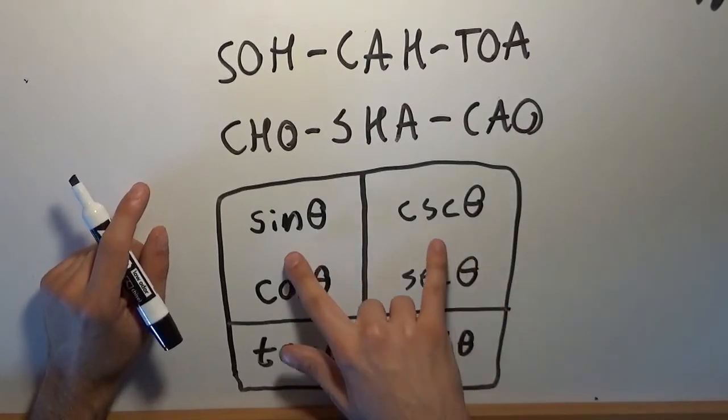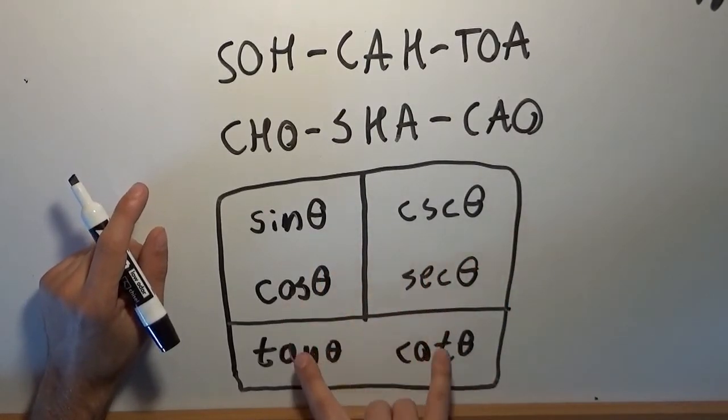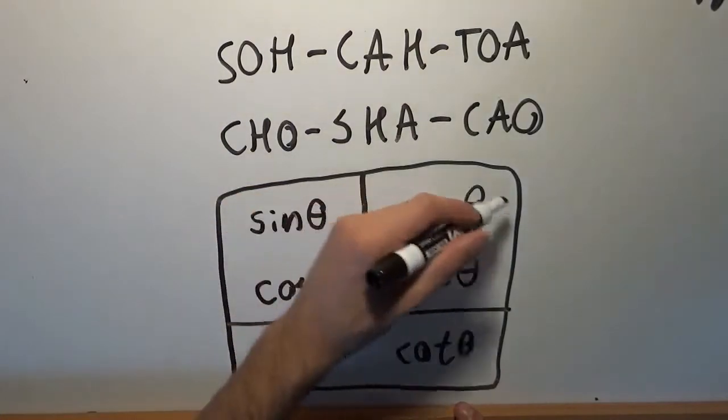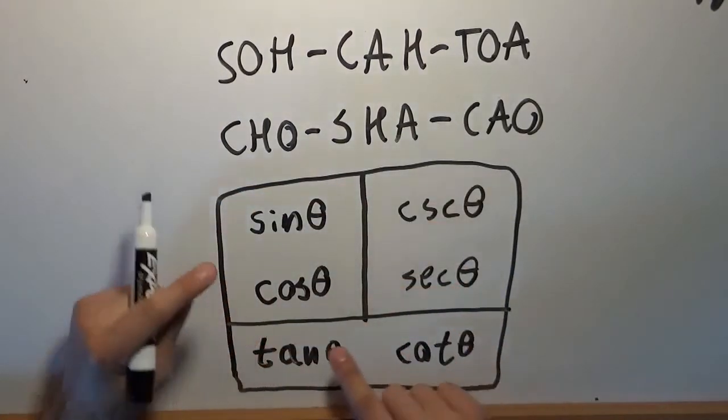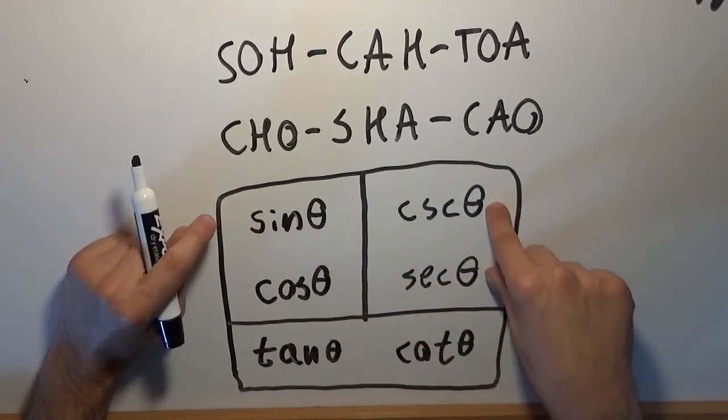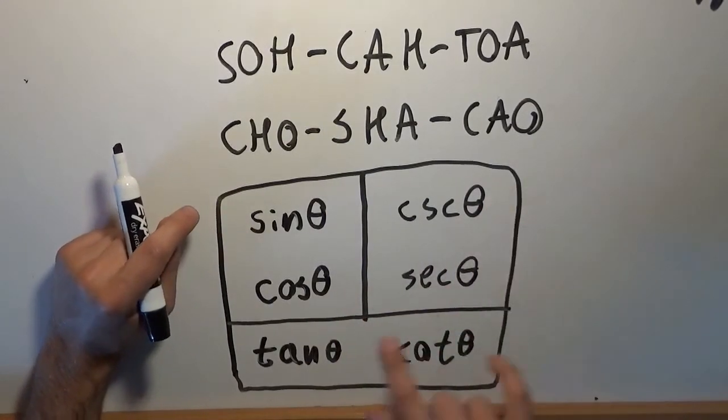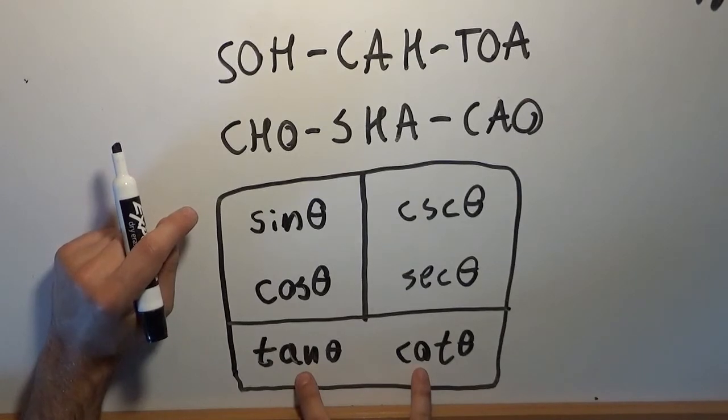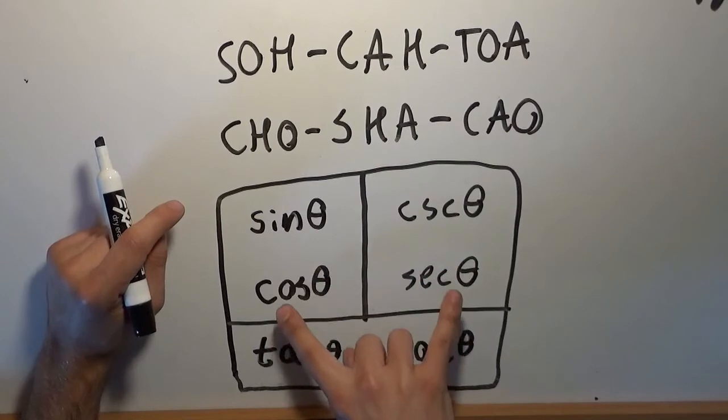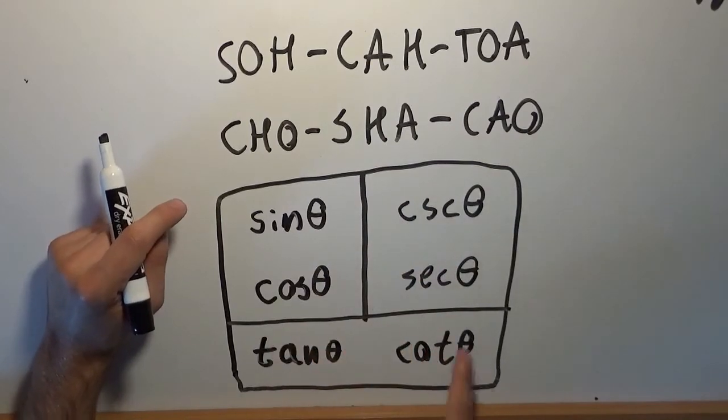And now, we have the nice chart of all six trigonometric functions related in a very particular way. Every function is across from its reciprocal, and it is connected to its cofunction. Sine and cosine are in the same box. Cosecant and secant are in the same box. Tangent and cotangent are in the same box.